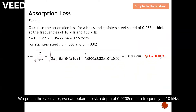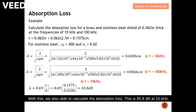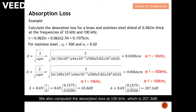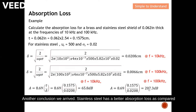At 100 kHz, the skin depth for stainless steel is 0.0066 cm. With these values we calculate the absorption loss: 65.8 dB at 10 kHz, and 207.3 dB at 100 kHz.